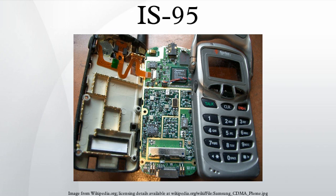The IS-95 standards describe a BAN air interface, a set of protocols used between mobile units and the network. IS-95 is widely described as a three-layer stack, where L1 corresponds to the physical layer, L2 refers to the media access control and link access control sublayers, and L3 to the call processing state machine.